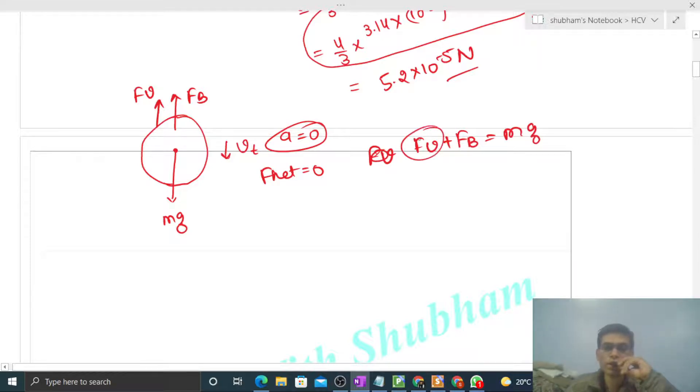Now viscous force will be 6πη times v_terminal, the terminal velocity, times r, plus the buoyant force we already calculated.